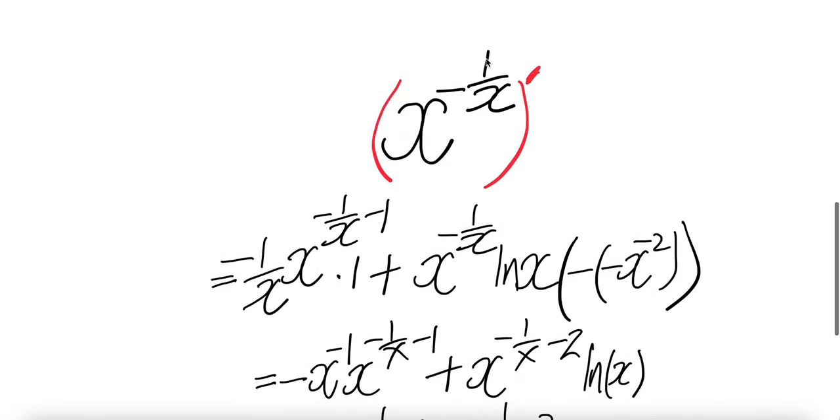this minus 1 over x comes down, and that x to the power negative 1 over x minus 1 times the derivative of this is 1. Plus, write the same thing, ln of this times the derivative of this.